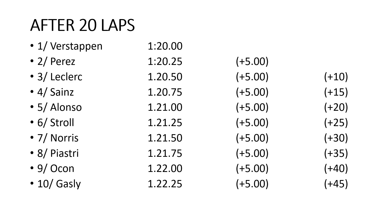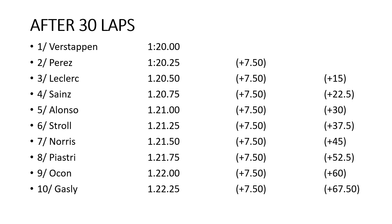We're ignoring pit strategy, we're ignoring DRS trains — we're looking at the general principles. After 30 laps, the gap between each competitor would be seven and a half seconds. So Perez is seven and a half seconds back, Leclerc a further seven and a half, meaning he's 15 seconds behind Verstappen. That same principle extrapolates down each competitor — Gasly is 67.5 seconds behind the leader after 30 laps.